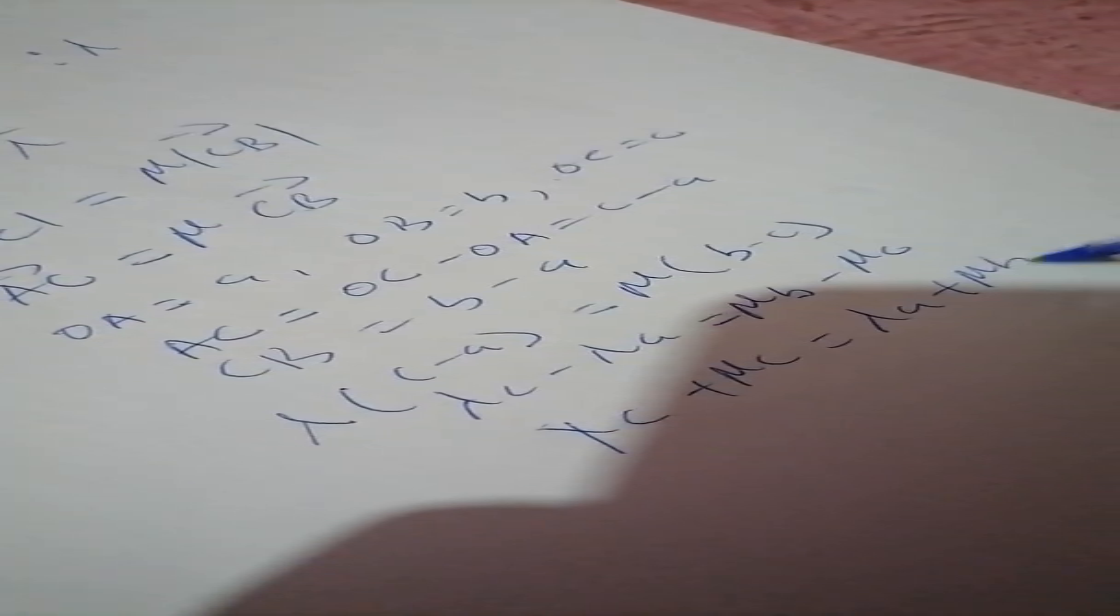So, we are just going to make C the subject. If you do your expansion properly, you should get lambda C plus mu C equals lambda A plus mu B. So, if I factorize C, I'll get lambda A plus mu B all over lambda plus mu. This is what the ratio theorem is saying.